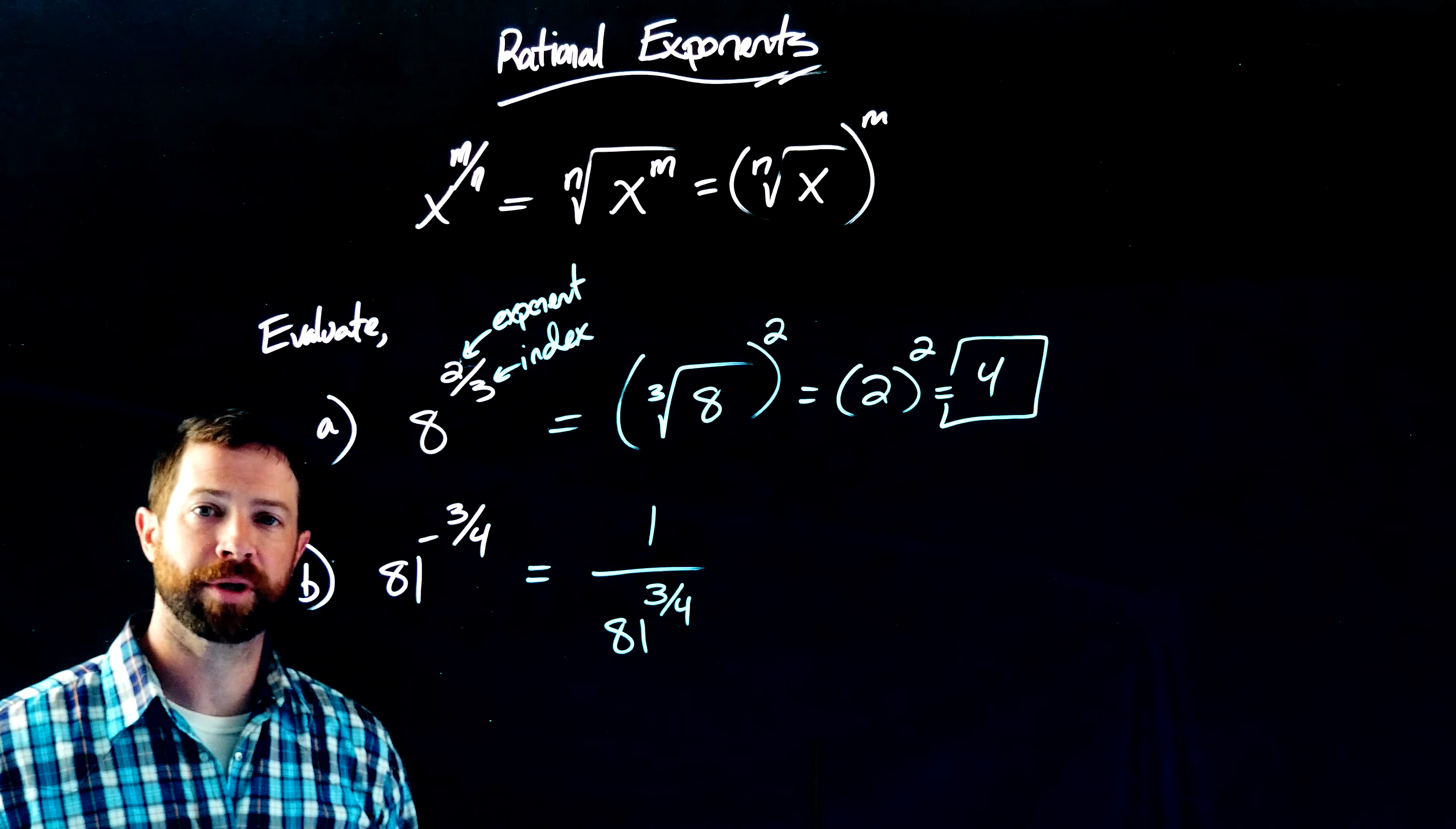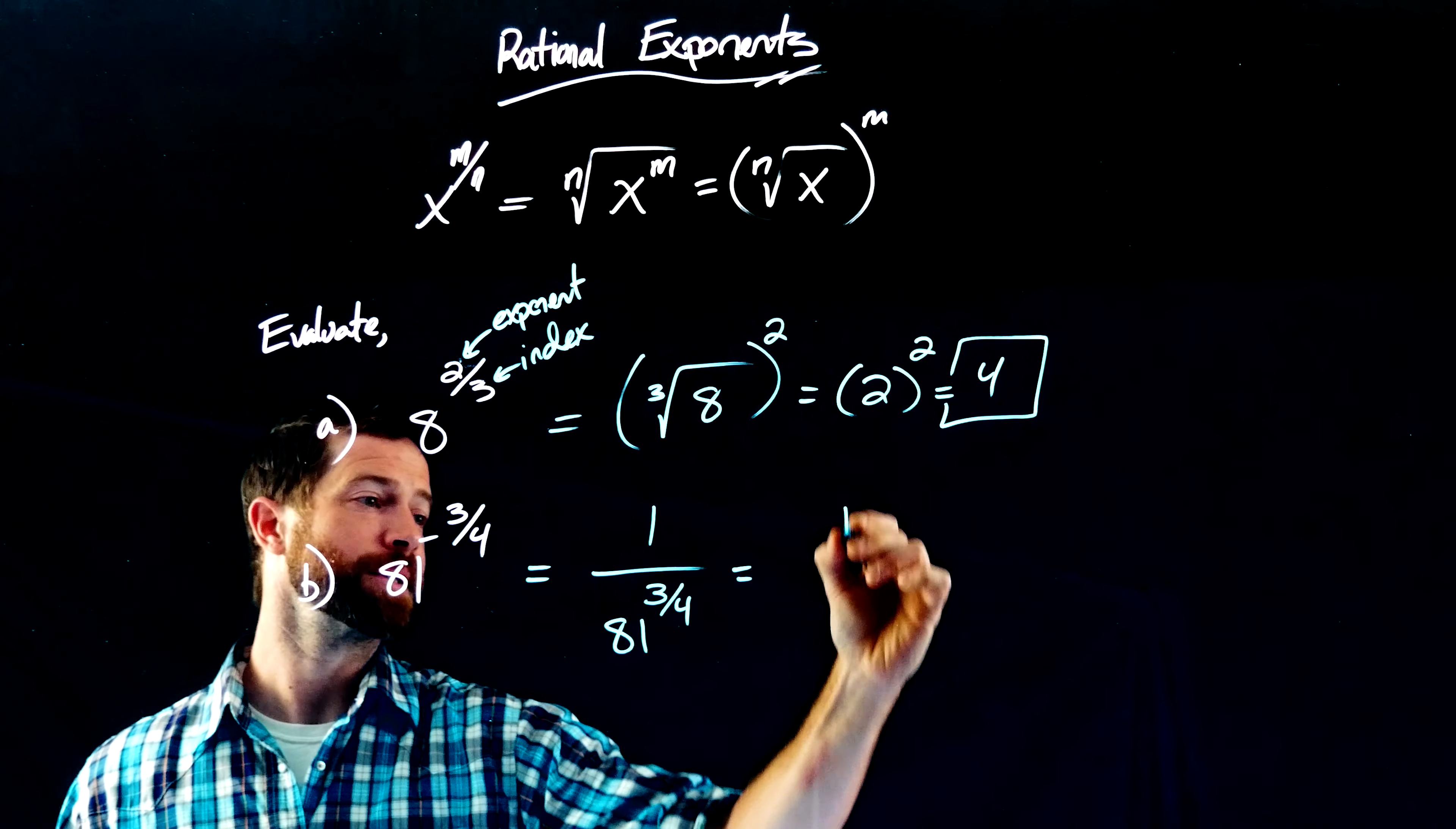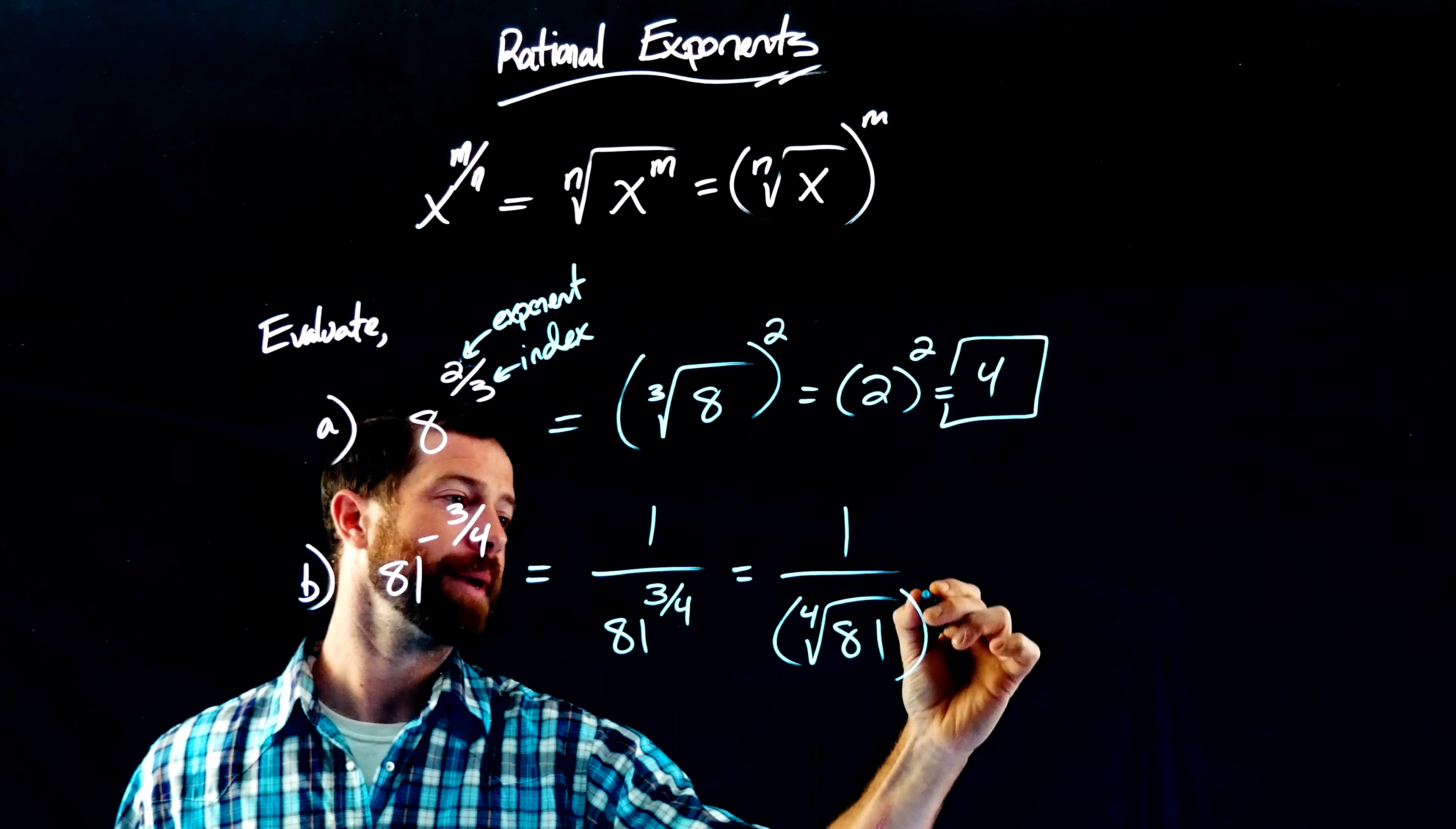That had nothing to do with the fractional component. But now I can apply the fractional piece. I can write this as the exponent and the 4 as the index. Again, I'm going to be down here in this denominator. So I have the fourth root of 81 raised to the third power.